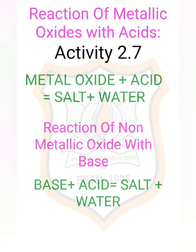Let us have Activity 2.7. Take a small amount of copper oxide in a beaker and add dilute hydrochloric acid slowly while stirring. When dilute hydrochloric acid is added to copper oxide, the color of the solution becomes blue-green and the copper oxide dissolves. The blue-green color is due to the formation of copper chloride. The reaction is: CuO (copper oxide) plus 2HCl gives CuCl₂ (copper chloride) plus water. Therefore, metal oxide plus any acid gives salt plus water.